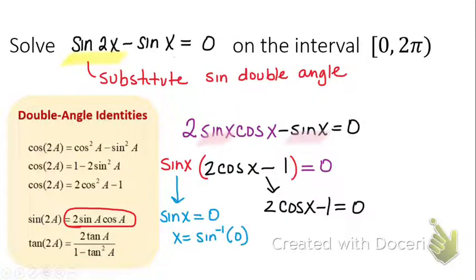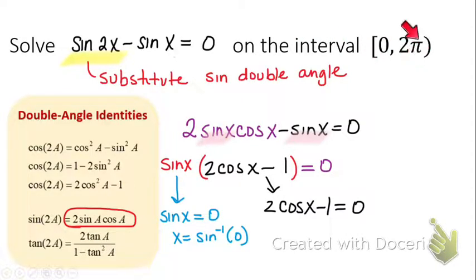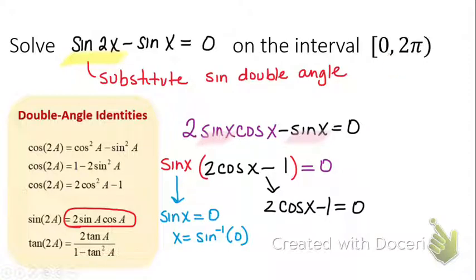Go to your unit circle and tell me what angles have a sine value of 0, between 0 and 2π. Notice that this interval has a parenthesis on the 2π, meaning we're not including 2π but we are including 0. The angles with a sine value of 0 are 0 and π — that's 2 solutions.